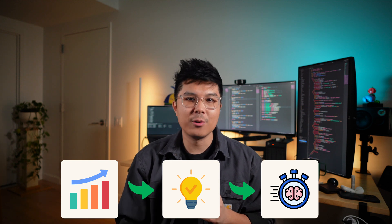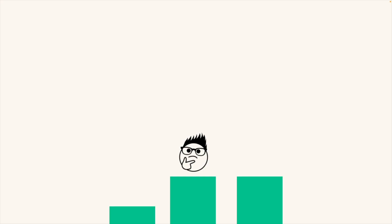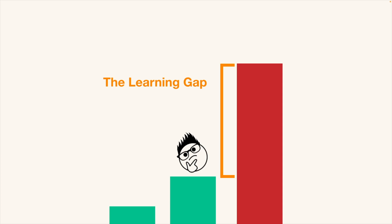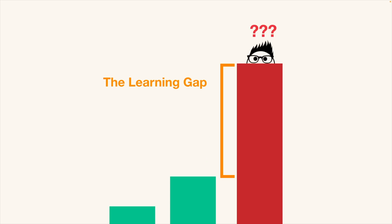After teaching software engineers for almost a decade, here's what I know. When someone is stuck on a problem and frustrated by it, it's because that problem is too far above their current abilities. This is the learning gap — it's the difference between what we already know and what we need to know to solve the current problem. This learning gap is critical. It can either make your learning smooth or slow your progress to a halt.